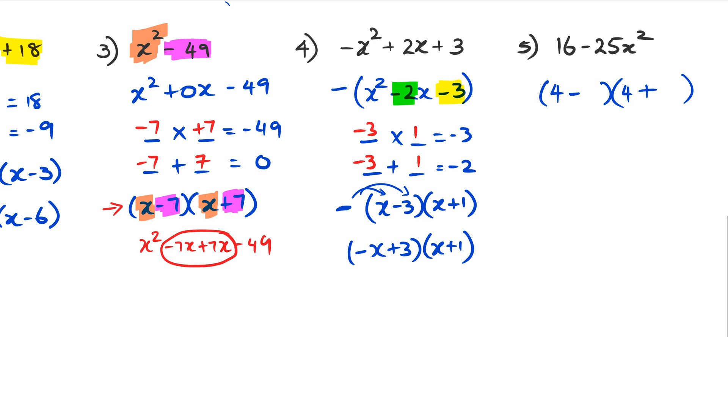If we follow that principle, we're kind of going backwards now. Looking at question 5, we've got 16 there which means the first number is going to be 4 for sure. Then we've got to have minus and plus. Then we have 25x², and if we take square root of 25x² you are going to get 5x. That's basically how you do factorization for these kind of questions.